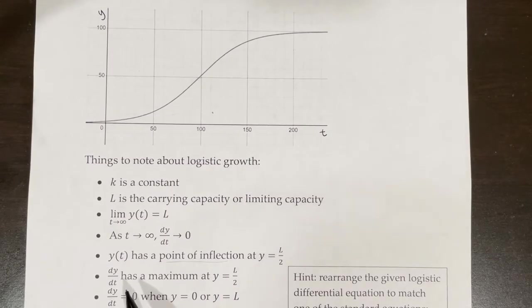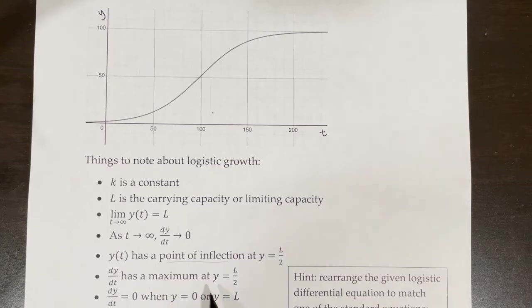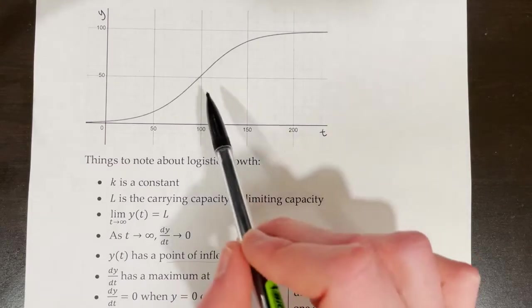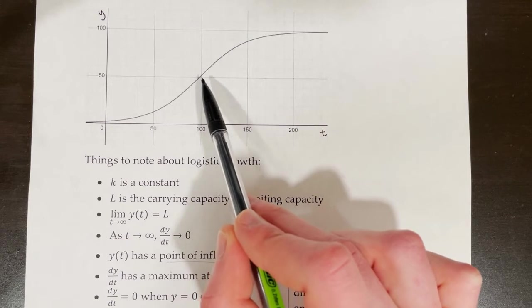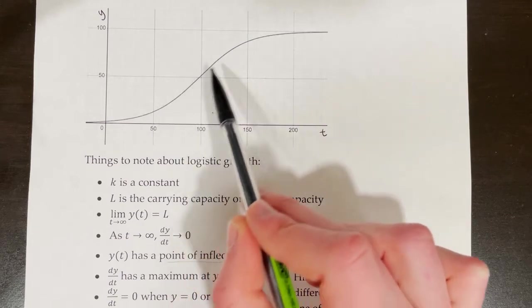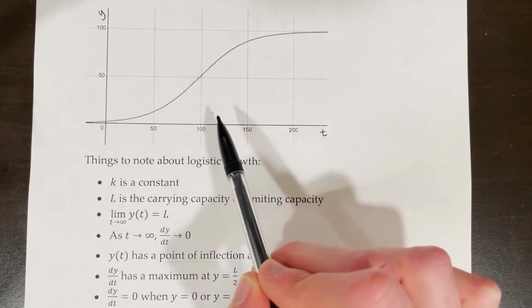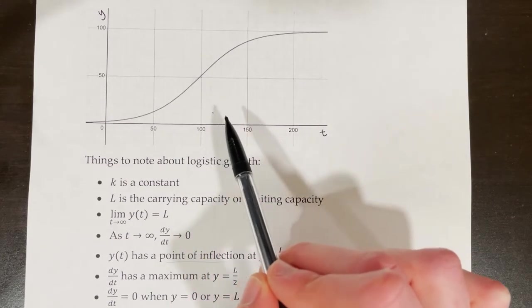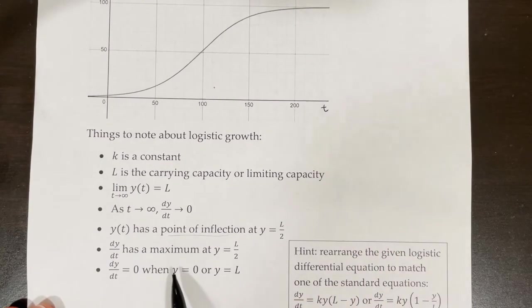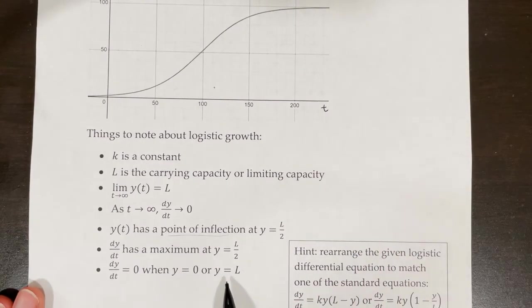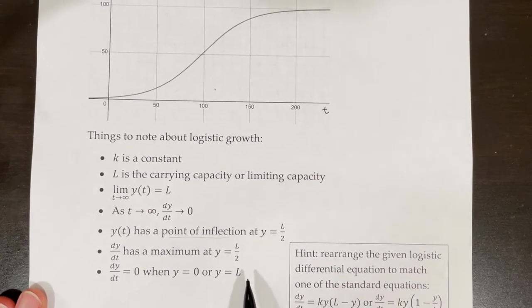dy/dt has a maximum at y equals L over 2. This point is where our function is growing the fastest, so where the derivative is greatest. dy/dt is equal to zero when y is equal to zero or when y is equal to L.